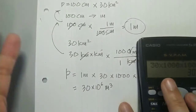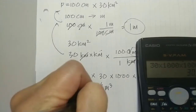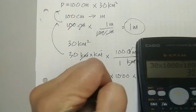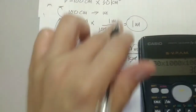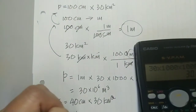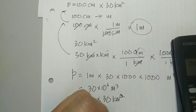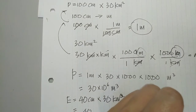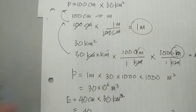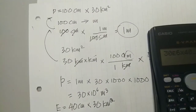Similarly for evaporation: E = 40 cm × 30 km². Convert: 40 ÷ 100 = 0.4 m. Area = 30 × 10⁶ m². Therefore E = 0.4 × 30×10⁶ = 12×10⁶ m³. All values are now in meter cube.